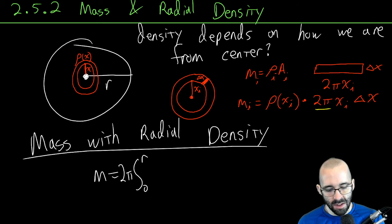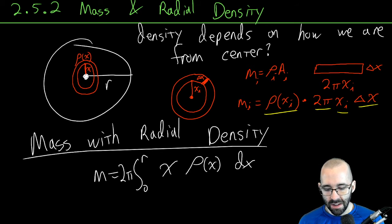Let's keep track of what we do: 2π times x times the density function times delta x. As delta x gets really small, we call it dx.